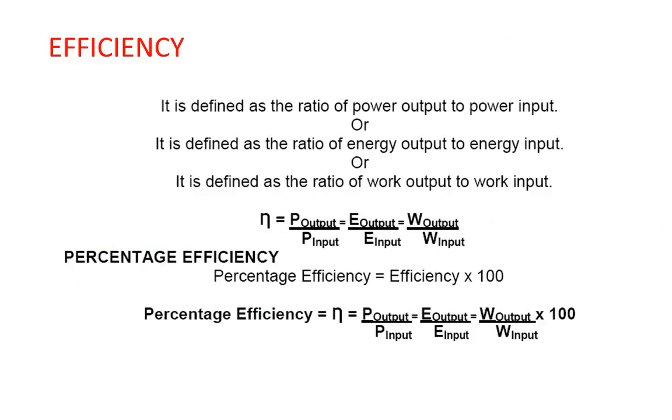Efficiency is the ratio of output power to input power, or in terms of energy, the ratio of output energy to input energy, and similarly for work. If you have to calculate the percentage efficiency in numerical problems, the symbol will be η (eta), and it will be the efficiency obtained multiplied by 100.